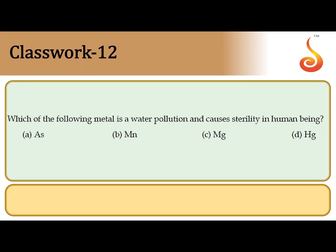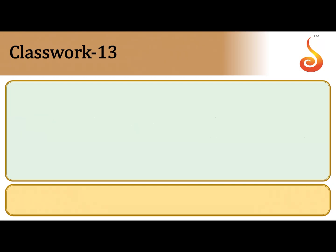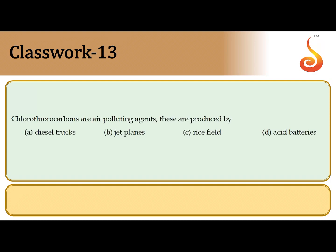The 12th question: which metal in water pollution causes sterility or infertility in human beings? Manganese is known to cause infertility or sterility in humans. Once it enters the food chain and reaches the human body in very high concentration, it leads to sterility. So the correct answer is option B.